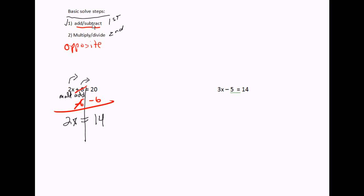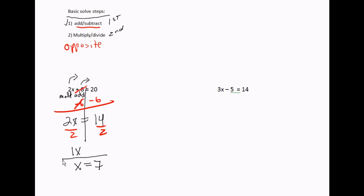We did the addition and subtraction. Now we're going to do the multiplication. It's two times x, and the opposite of multiplying by two is dividing both sides by two. Two divided by two is one x — another way of saying one x is just x. On the right-hand side, fourteen divided by two is seven. My answer is x equals seven.